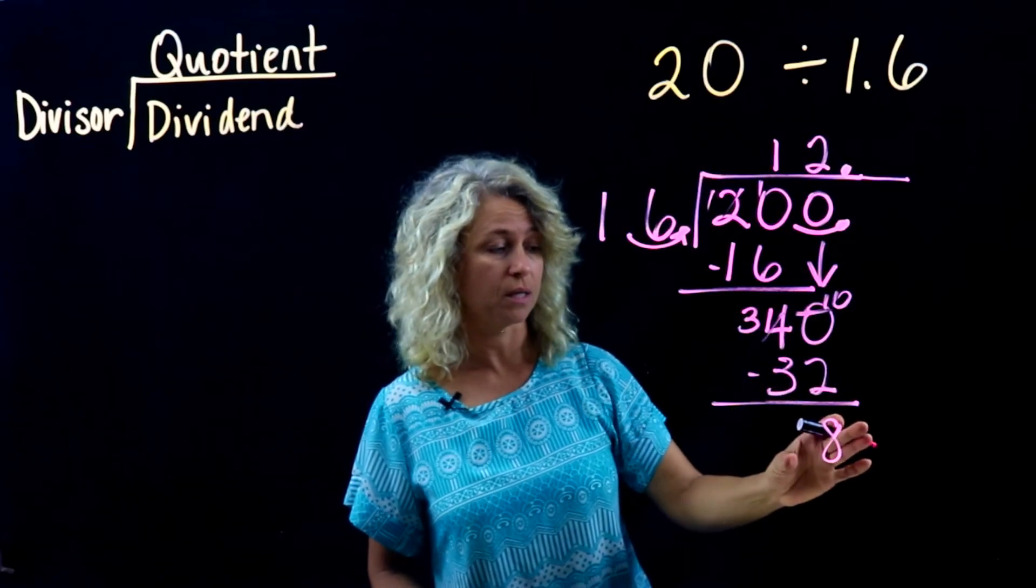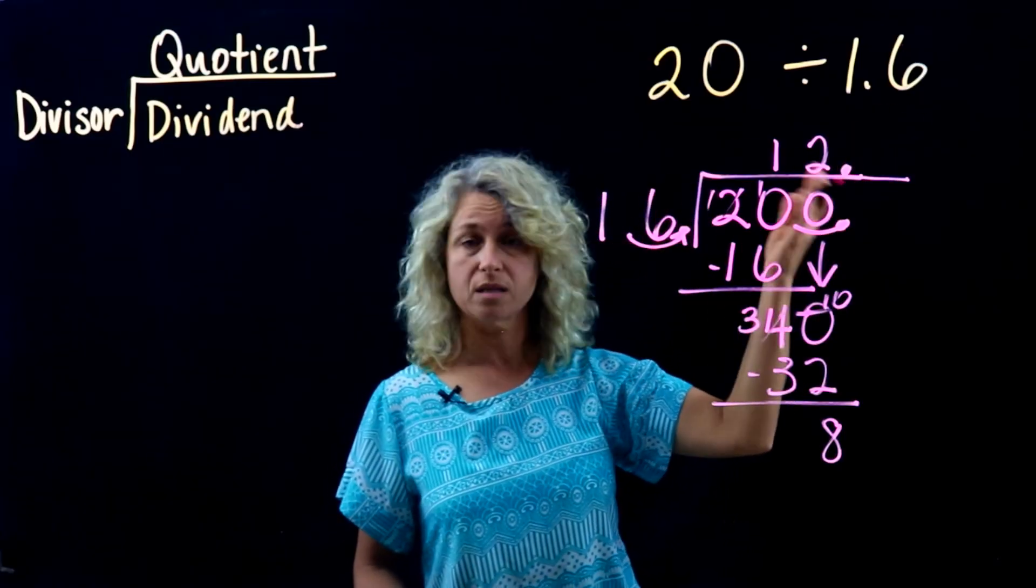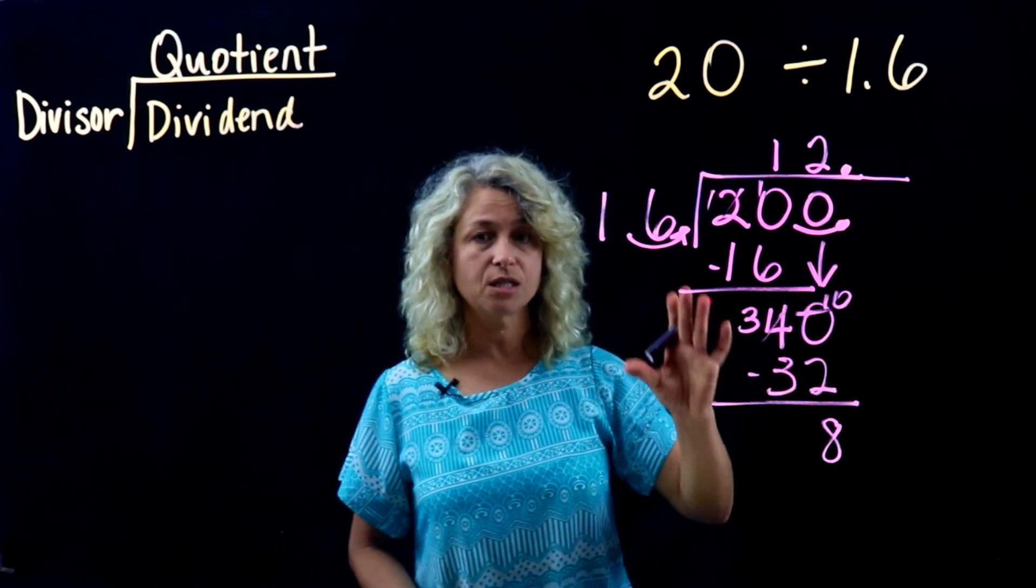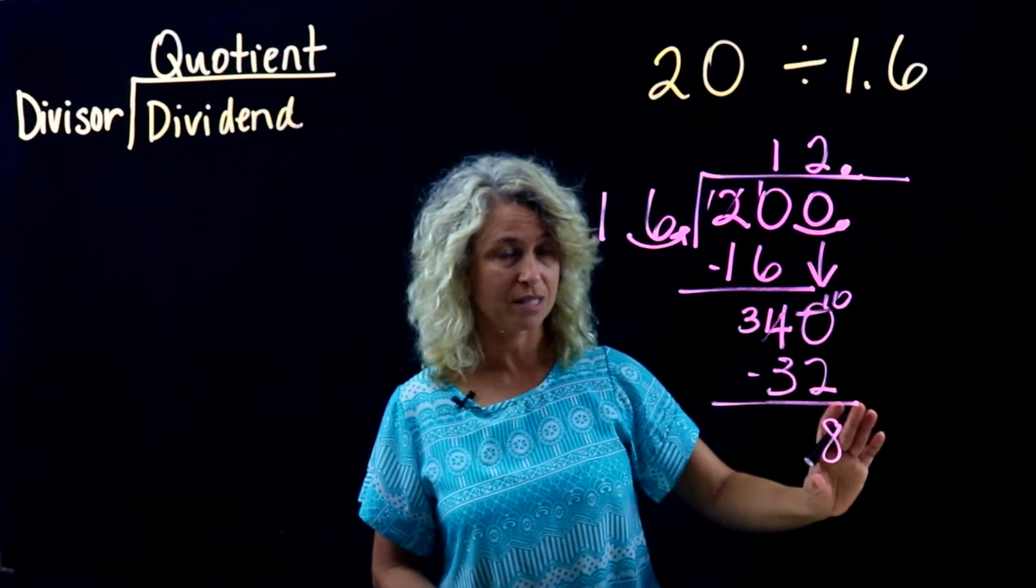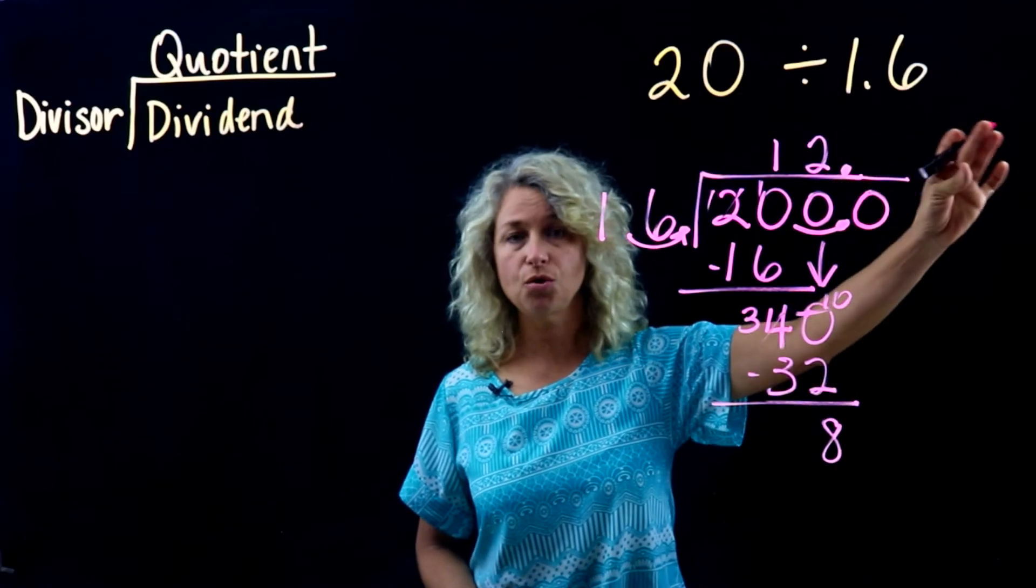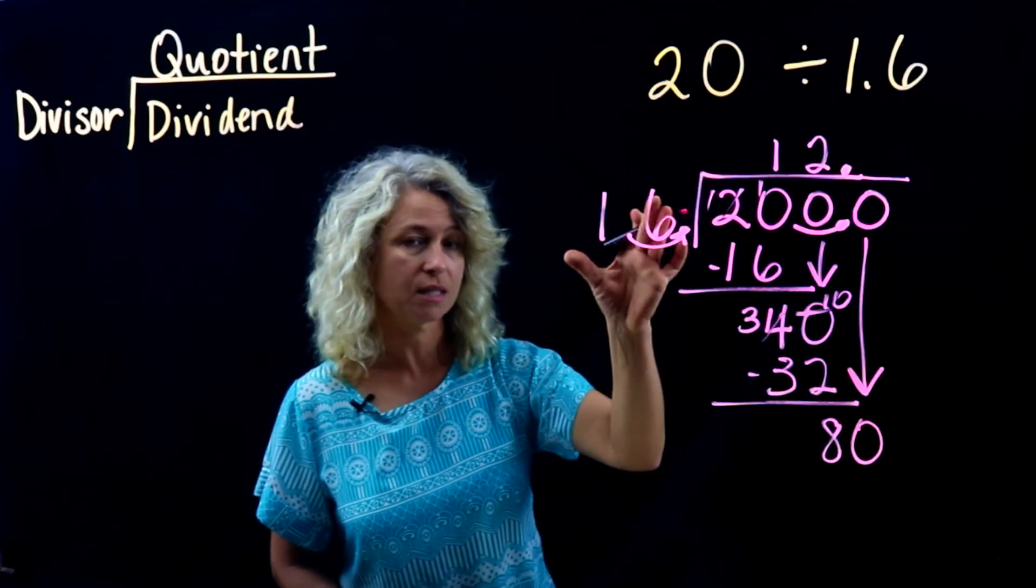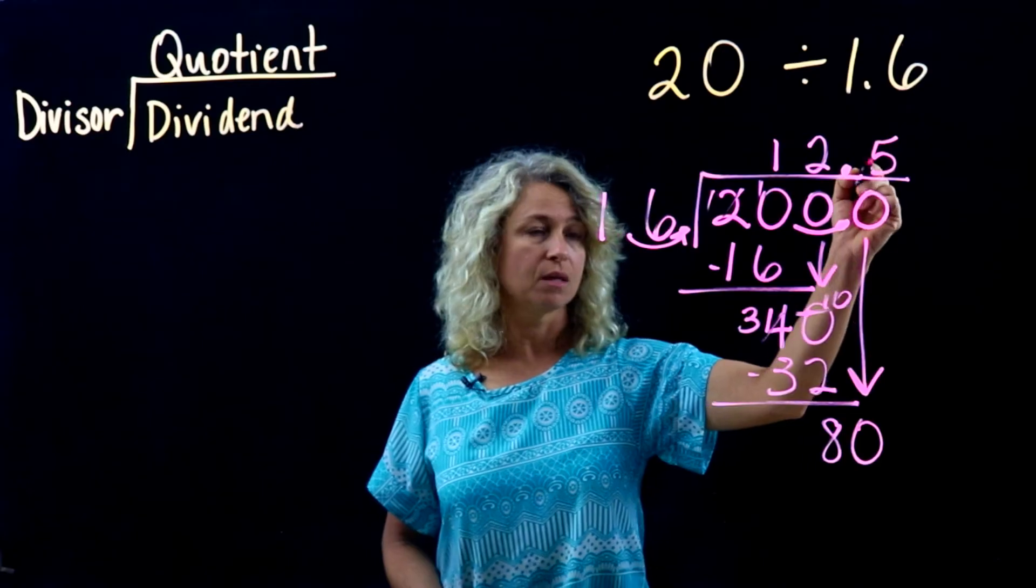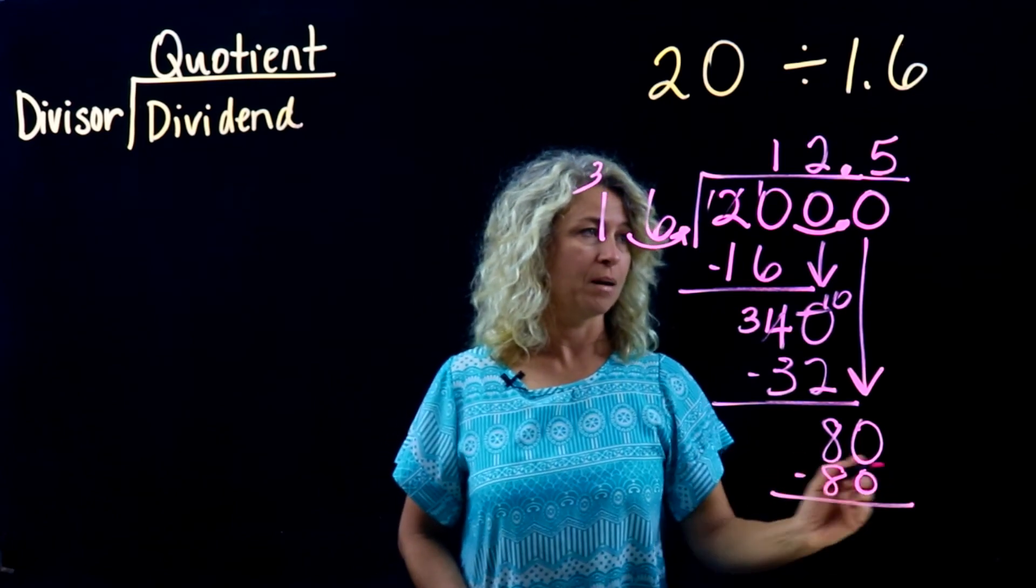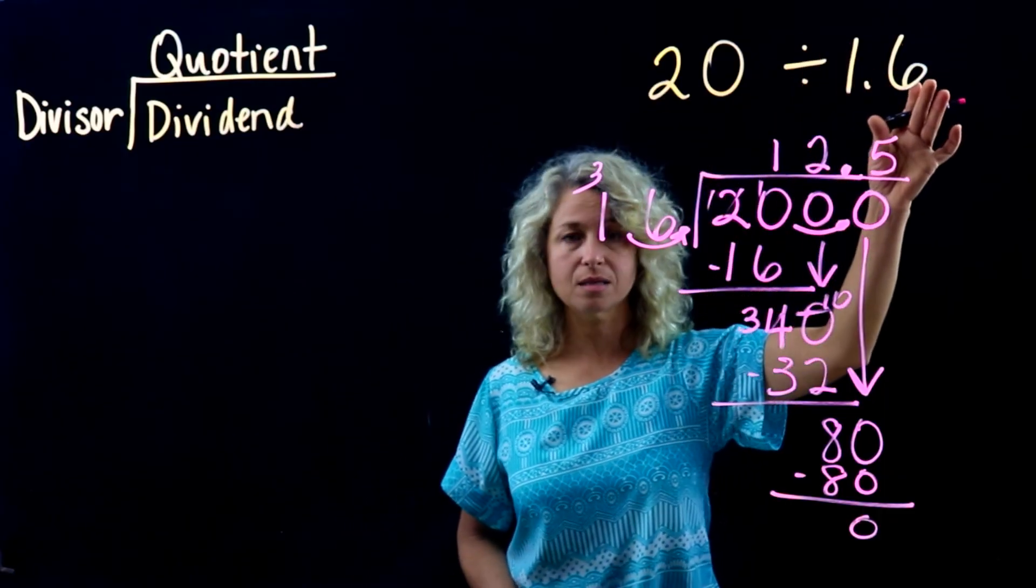In the past we also interpreted this remainder as a fraction and we said eight over sixteen, which we could simplify to one half. But if we want to do it the new way, we would continue and do it with an additional zero. So let's add an additional zero here because we want to fill this in and continue the decimal. Bring down the zero and this becomes eighty. Now sixteen will go into eighty-five times. Five times six is thirty, five times one and three more is eight. Now we're finished. Twenty divided by one point six is twelve and five tenths.